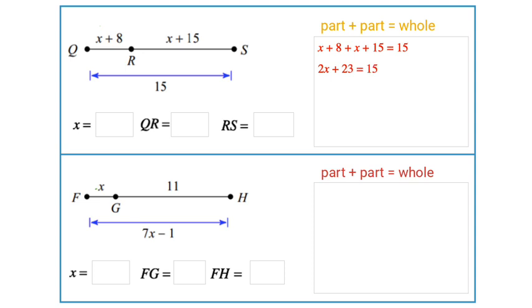So first you should combine like terms. Now we're going to subtract 23 from both sides of the equation. Let's combine the like terms on the right. 2x = -8, so x = -4. That's the value of x.